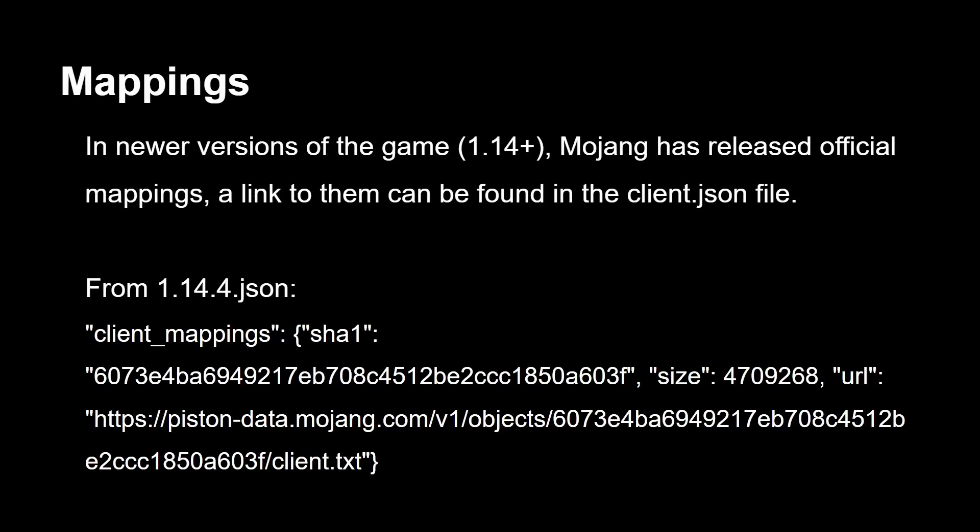For mappings, everything above 1.14 is released by Mojang, and you can just find it in the client.json file. For 1.14, just go into .minecraft/versions, open 1.14.4.json, search the file, and there's going to be a link that ends with client.txt. Just open that up in your browser and it's going to have all the mappings.